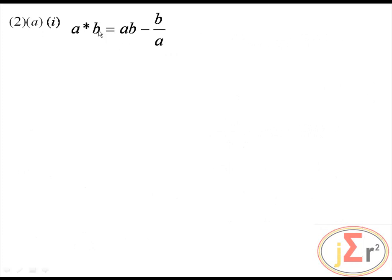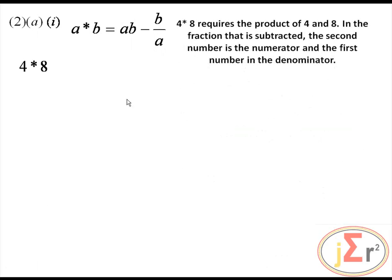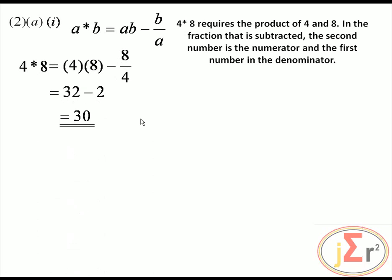Binary operations: A asterisk B equals AB minus B over A. Take careful note that it is the second letter that is the numerator, not the first. So 4 asterisk 8 requires the product of 4 and 8, with 8 as the numerator of the fraction. So 4 asterisk 8 is 32 minus 8 divided by 4, which is 32 minus 2, equal to 30.